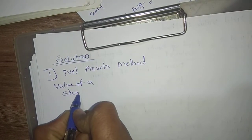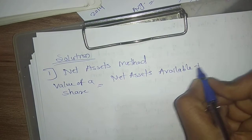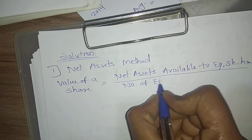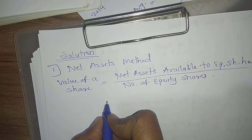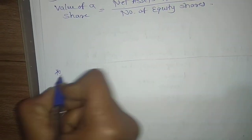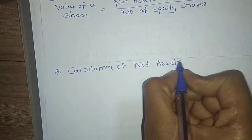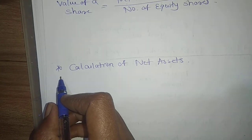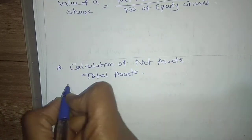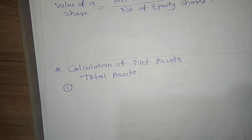Here we calculate net assets available to equity shareholders. I will list the total assets. You consider the market values, not book value. If the market value is not available, then only consider book value. I will write the particulars and amounts directly.